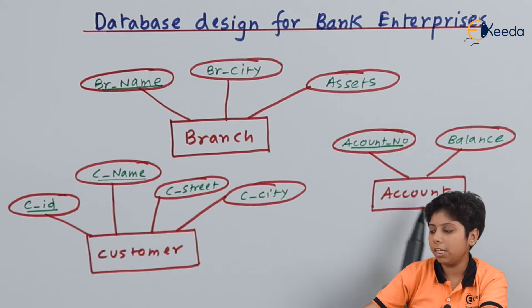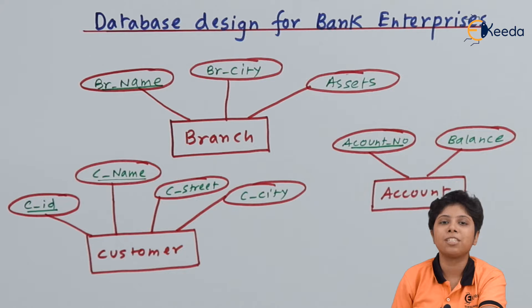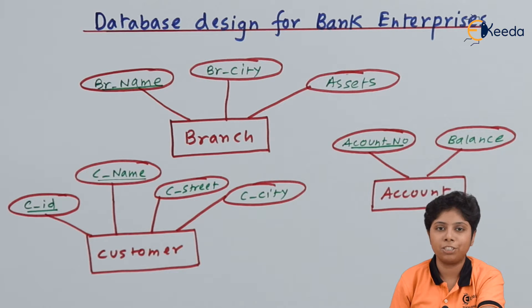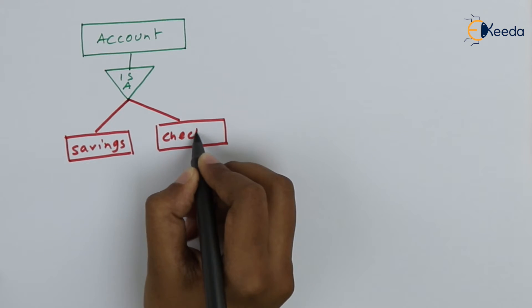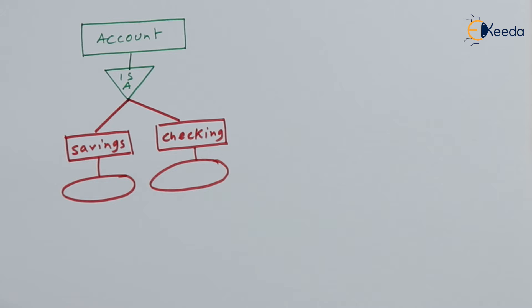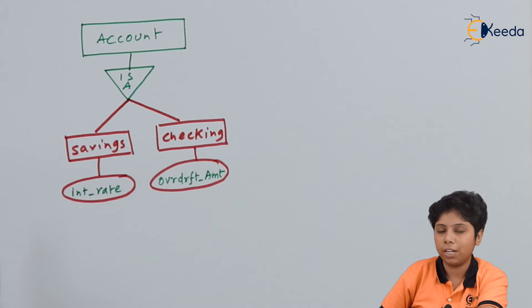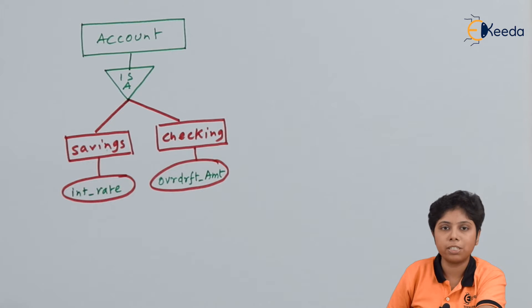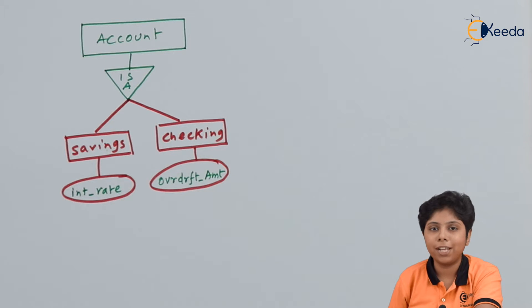For the account entity, account number is the primary key and balance is another attribute. We specialize the account into two types: savings and checking. For savings, the specialization adds an interest rate attribute alongside account balance and account ID. For checking, the overdraft amount is appended with account number and balance.